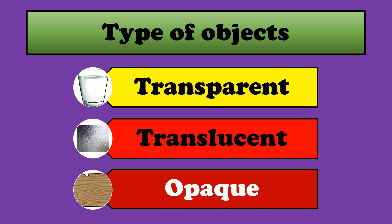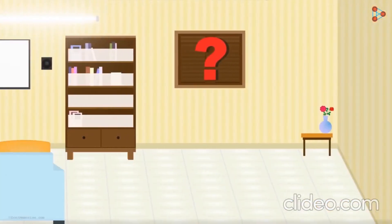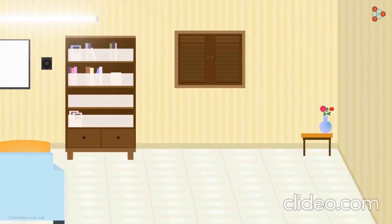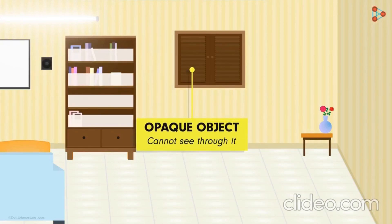Now we are going to observe a few objects around us. Let's do some observation. Can we see the objects outside the window? No, we can't. But the question is why? Because the light from outside the window does not reach us. The wooden shutter blocks this incoming light. Such objects are called opaque objects and they are very large in number.